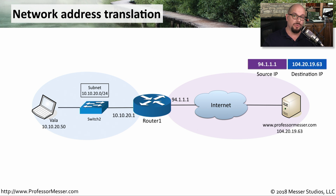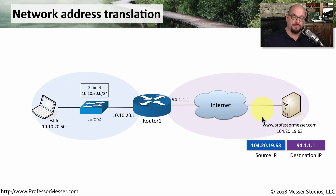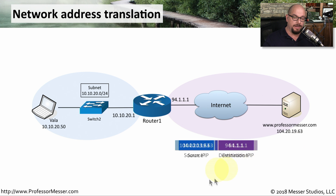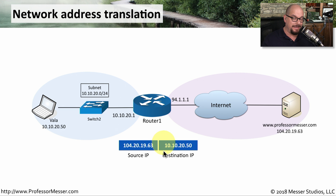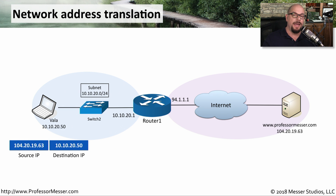Now that the packet shows a different source IP address, it's sent across the internet. The professormesser.com server receives Vala's request and sends a response back, with the destination IP being 94.1.1.1 — the address that originally came in as the source. The router recognizes this inbound traffic on 94.1.1.1, looks up its table, and realizes the information needs to go to Vala. It performs another network address translation, translating the destination back to 10.10.20.50, and the packet finds its way to Vala's workstation.